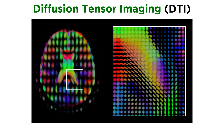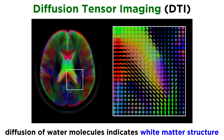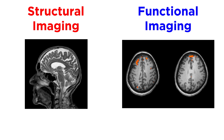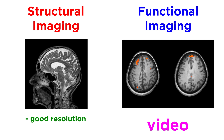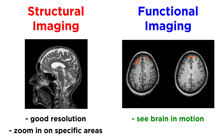There is also diffusion tensor imaging, or DTI, which looks at the diffusion of water molecules as an indicator of white matter structure. With imaging in general, we should note the difference between structural imaging and functional imaging. This is essentially the difference between a photo and a video, since the first of these gives good resolution and allows us to zoom in on specific areas to get very specific data. By contrast, the latter allows us to see the brain in motion in order to get the bigger picture.